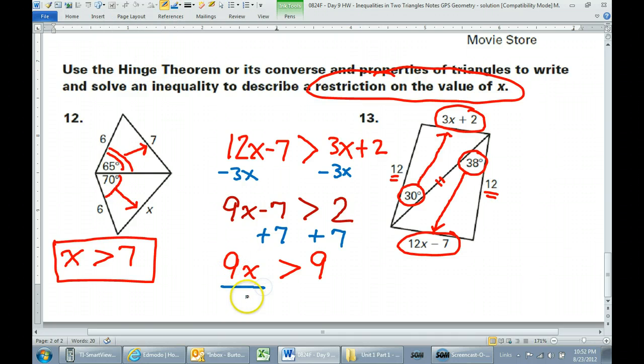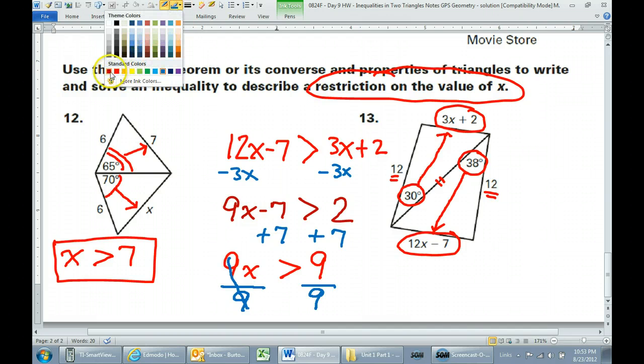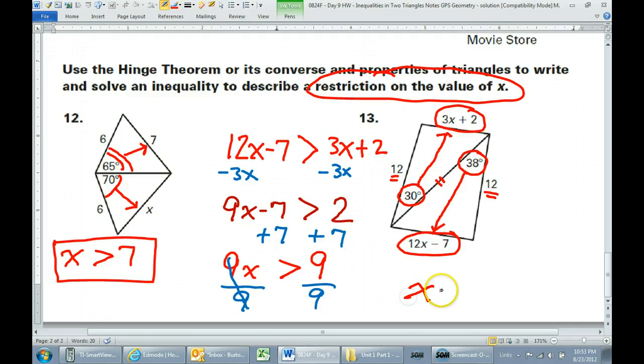I'm going to divide both sides by 9. That makes 1. So the final answer is going to be that x is greater than 1. That would be the restriction on the variable. And that is how you do number 13 using the hinge theorem.